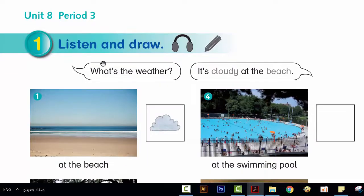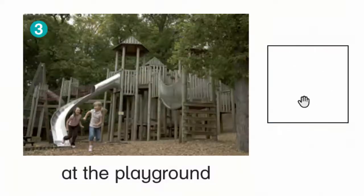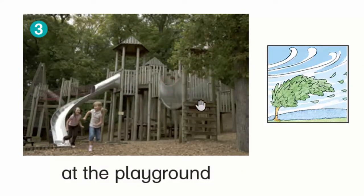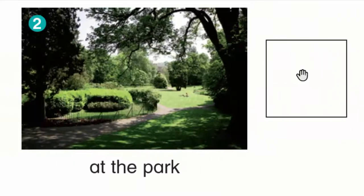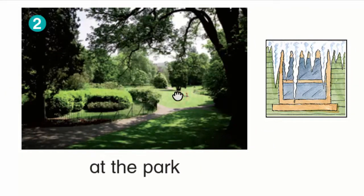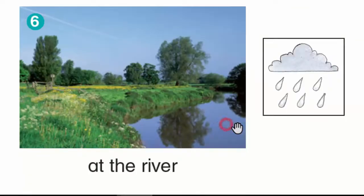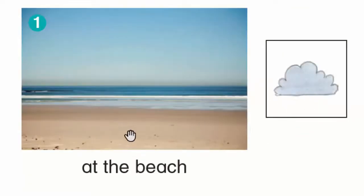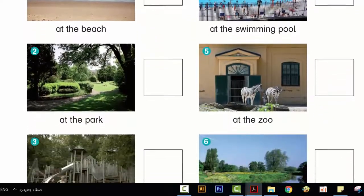Listen and draw. It's hot at the swimming pool. It's windy at the playground. It's sunny at the zoo. It's cold at the park. It's rainy at the river. It's cloudy at the beach. It's sunny at the beach.